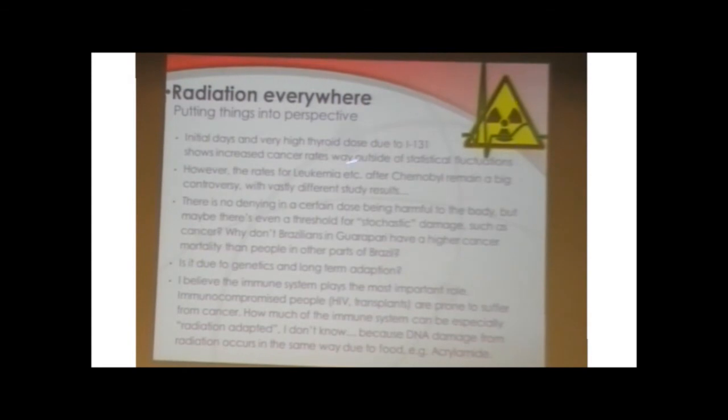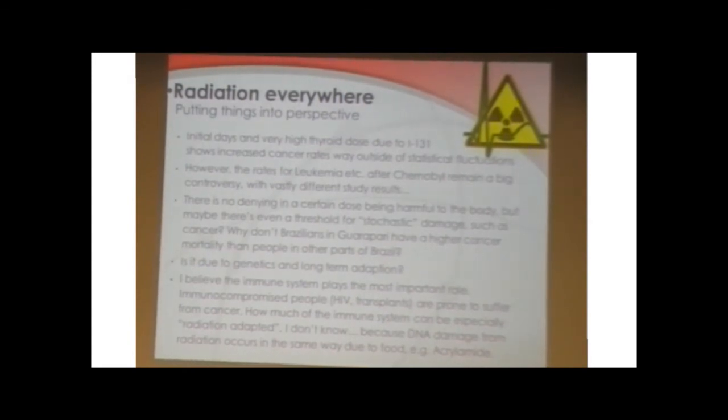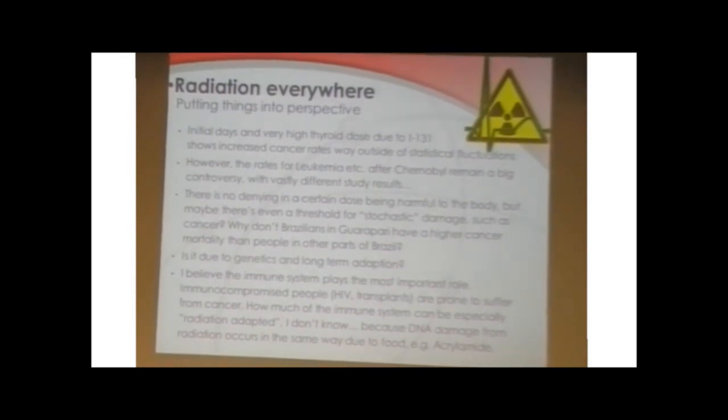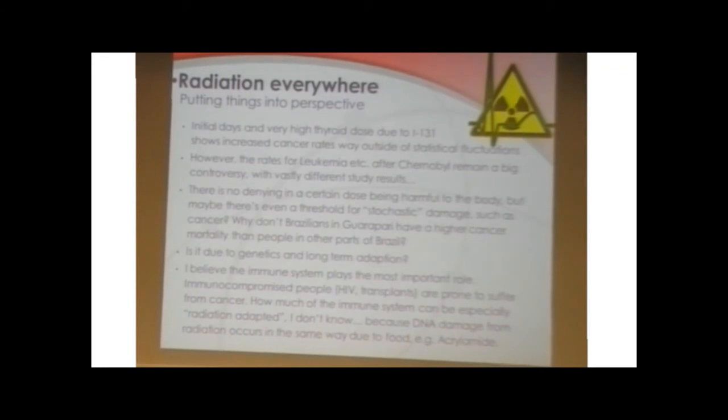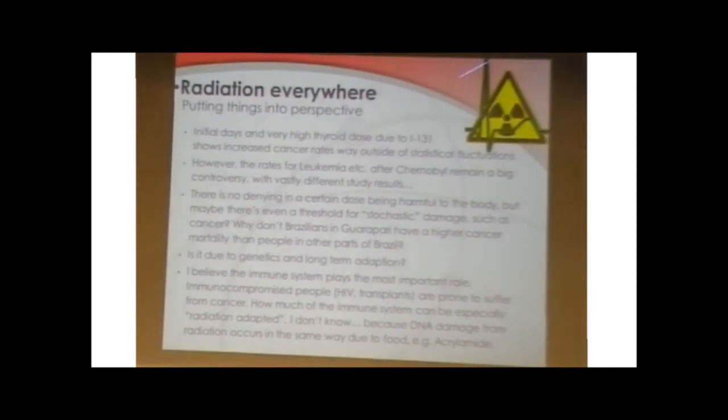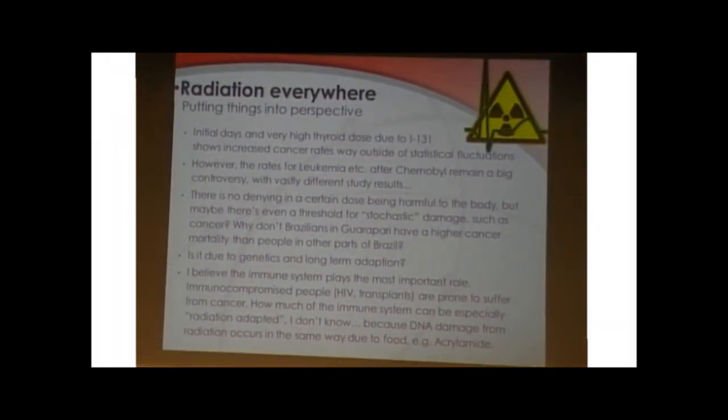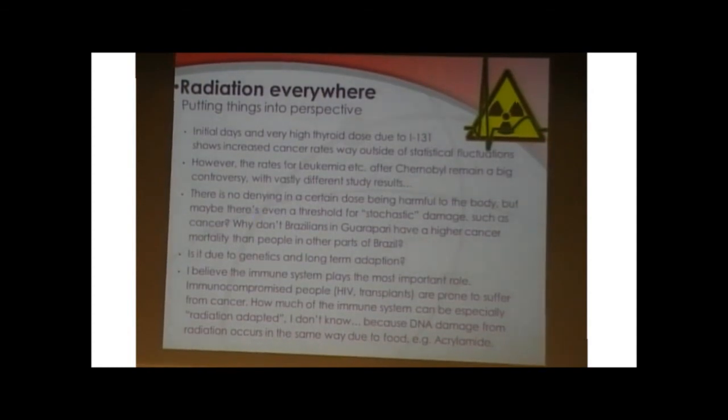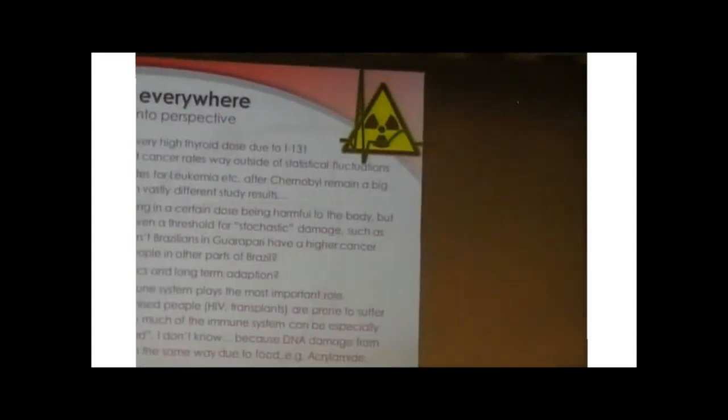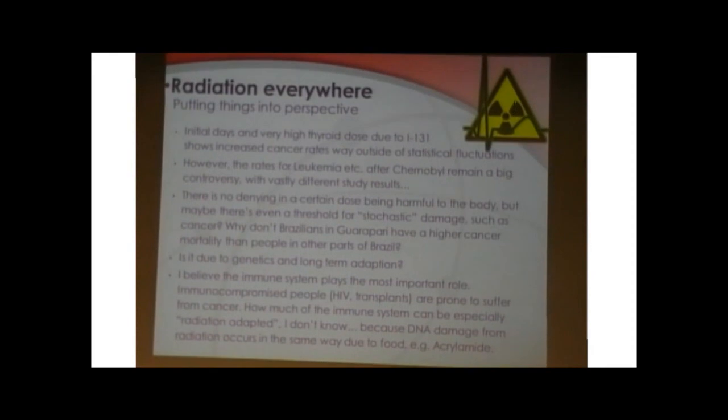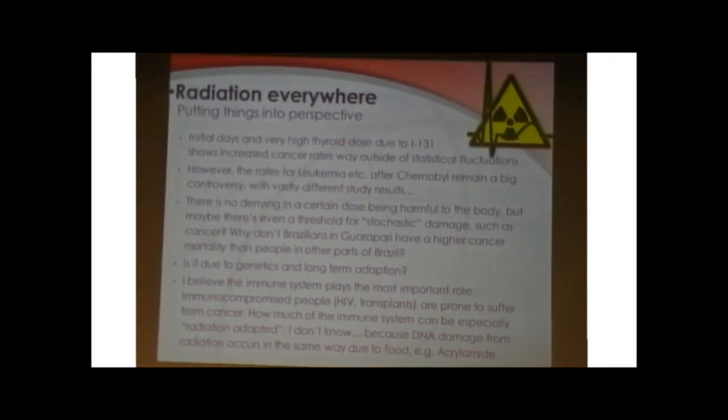Now, putting things into perspective, of course, in the initial days, you had a very high thyroid dose due to iodine-131. It means multiple gray of dose, actually. And pretty much most of the studies that you can find on the internet about that link that to a great increase in cancer rates that are outside of statistical fluctuations. But interestingly, if you look at enough studies, you will find that this is the only thing that seems to be very deterministic, that seems to be very clear. The rates for leukemia, et cetera, after Chernobyl, you can find studies that say, oh, we found the same rate of leukemia next to whatever, a coal power plant, for example. While usually you see these exaggerated movies of mutations, horribly crippled animals, horribly crippled children and everything, while some of these studies claim that these same levels can be found pretty much in every big city due to whatever effects, fine carbon dust, whatever. I don't know. So it's very interesting. And why don't these Brazilians have a higher chance of cancer? I wonder.